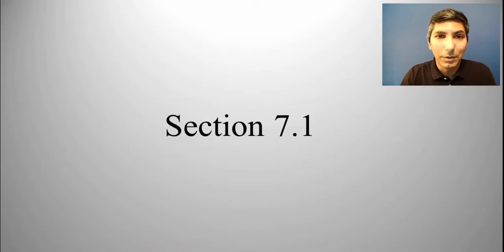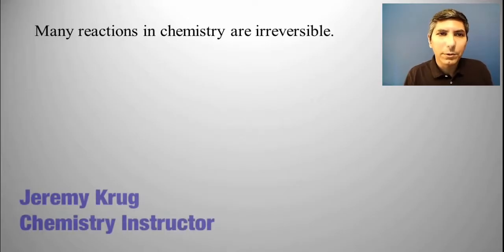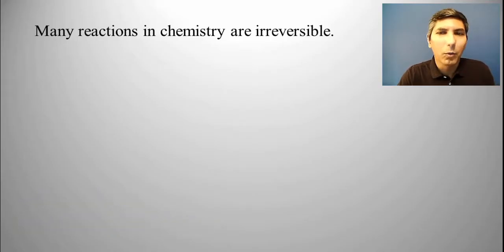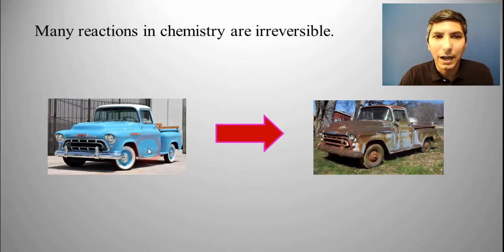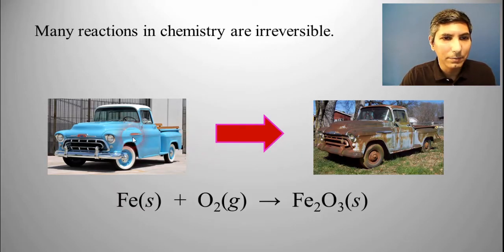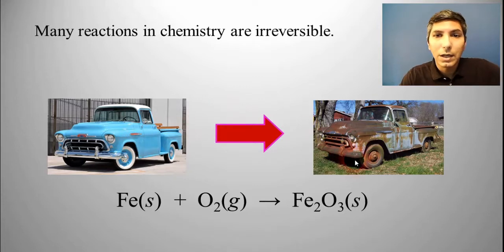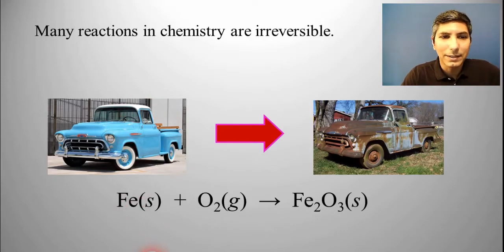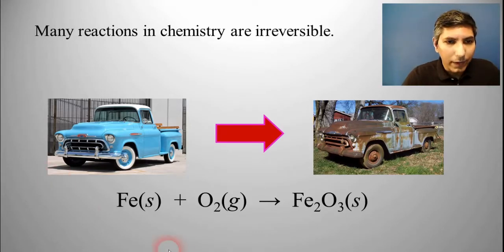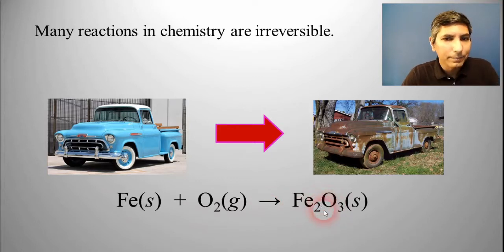We start unit seven with a discussion of what equilibrium is. Many reactions in chemistry are irreversible. For example, iron solid reacts with oxygen gas to produce iron three oxide solid, which we call rust. There really isn't a way for that rust on a truck to reverse course and turn back into shiny iron. That's why we say a reaction like this is irreversible — it goes only in the forward direction.